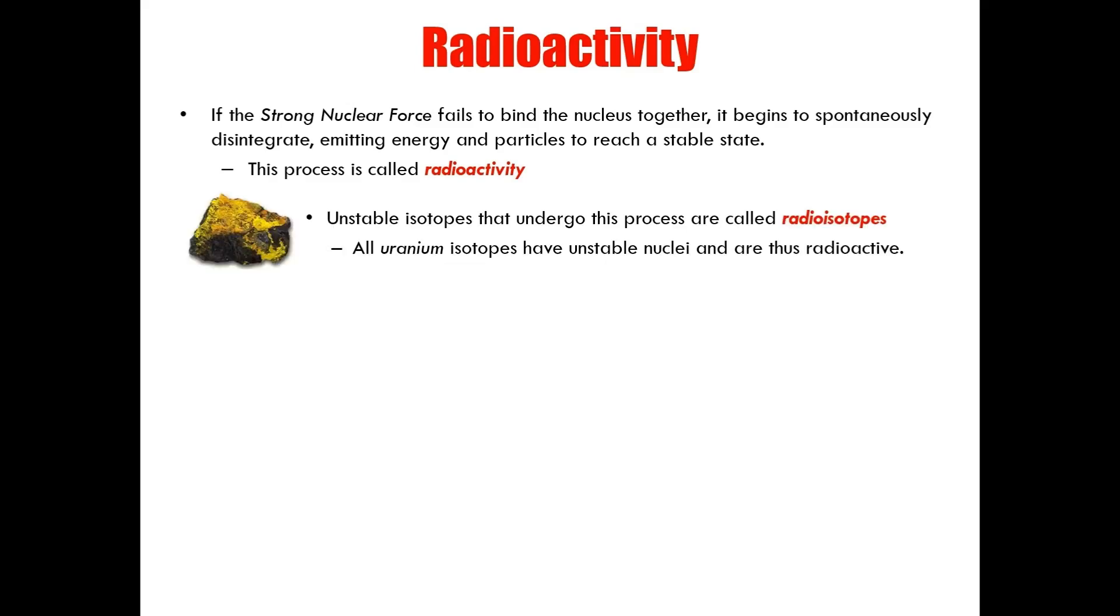The unstable isotopes that Marie Curie discovered are called radioisotopes. All uranium isotopes, for example, have unstable nuclei that spontaneously disintegrate, thus they are considered to be radioactive. It is important to distinguish that chemical reactions involve interactions of atoms, but reactions that involve changes in the nucleus of an atom are called nuclear reactions.